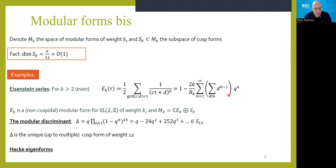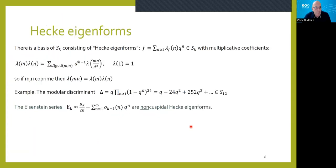Another example is the modular discriminant Δ, the unique cusp form of weight 12. It can be defined by an infinite product which clearly has an integer Fourier expansion, though it is far from obvious that it's a modular form of weight 12. Another important source of examples are Hecke eigenforms, defined by the property that their Fourier coefficients are multiplicative — satisfying the Hecke relations. When m and n are coprime this reduces to multiplicativity. The modular discriminant is a Hecke eigenform, and Eisenstein series also satisfy the Hecke relations.